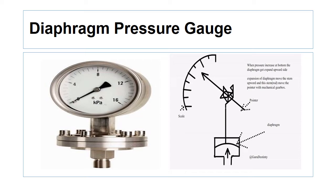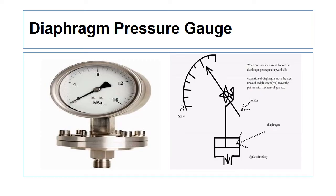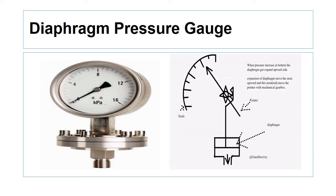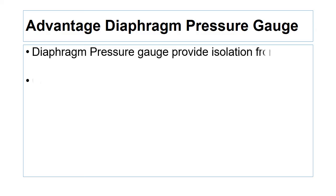The differential pressure arising across the diaphragm lifts it up and puts the pointer in motion. The deflection of the diaphragm is very small — plus or minus 1 mm. Advantages of the diaphragm pressure gauge: it provides isolation from the process and can measure low pressure accurately.